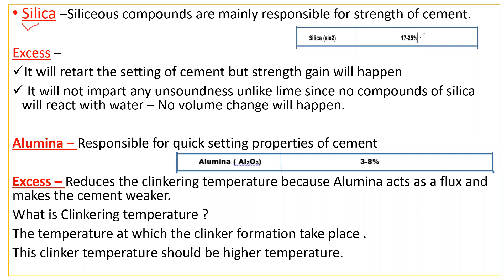Now the question that comes up in our mind: what happens if the percentage of silica is more than 25 percent? If you put excess silica, the first thing is that it will retard the setting of cement, but the strength gain is still going to happen. Retard means it will take more and more time for the cement to set.